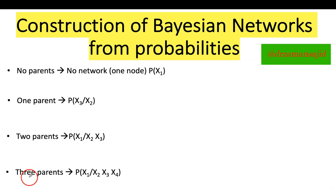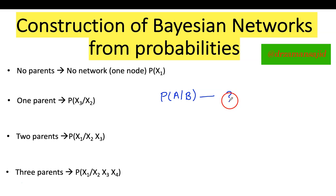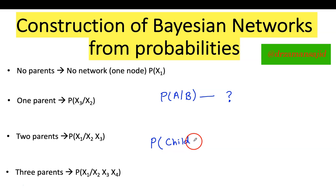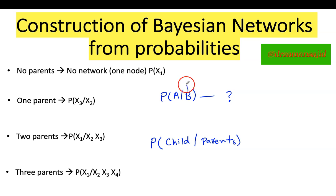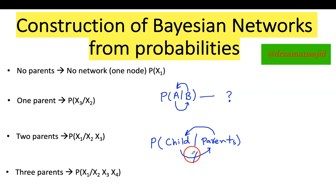Before I go into the examples, I want to explain something. For example, if I have a probability of A given B and I'm looking to construct its network, you just need to keep in mind one very simple formula: the probability of the child given the parent. In Bayesian networks, we use this slash notation — child given parent.